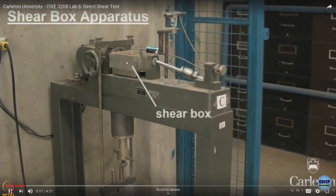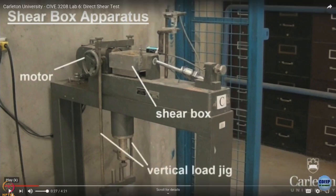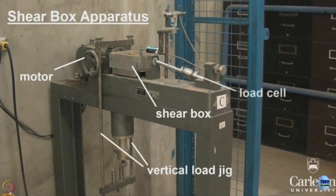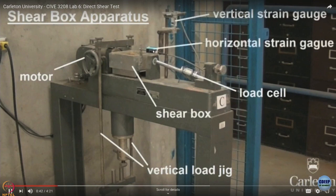This box can be utilized for doing drained and undrained test both. Now see what happens is because of this motor assembly, if I keep the sample inside this box, there will be a relative slip of one portion of sample on the bottom portion of sample. How much strains I have applied to the sample can be measured with the help of horizontal gauge and vertical strain gauges.